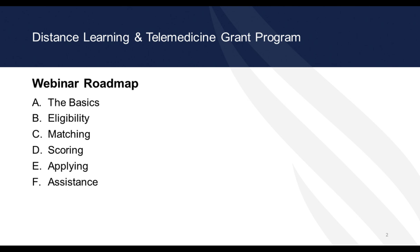Just to lay out a roadmap: we're going to start with a brief overview of the basics of the DLT grant program, then talk about eligibility, the important category of matching, scoring — which is particularly important — some ins and outs of applying, and information on where you can turn for assistance. Also joining us for questions are my colleagues Sean Arner and Scott Steiner, both in the Home Origination and Approval Division.